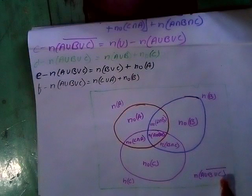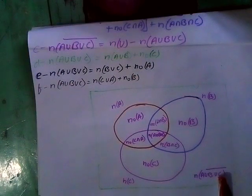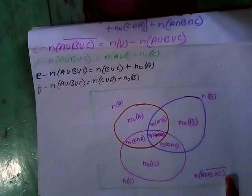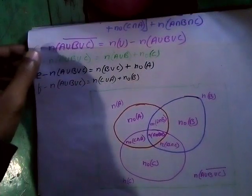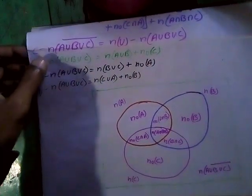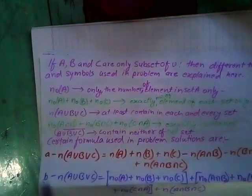N A union B union C complement means neither of any sets — it is different from being contained in any one of the sets. All this terminology and all these formulas are used in lots of problems.